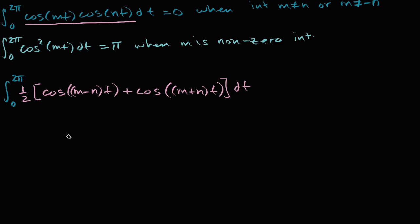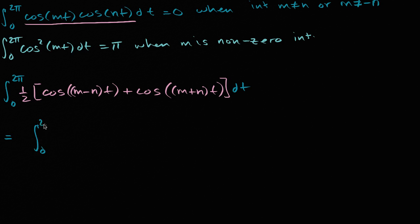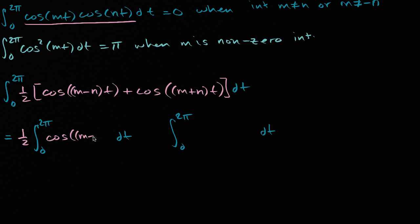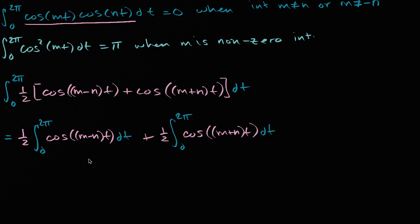So let's think about two situations. Using integration properties to expand this out, I'm going to write this as two different integrals from zero to two pi. It's going to be one-half times the integral of cosine of (m minus n)t dt, plus one-half times the integral of cosine of (m plus n)t dt.